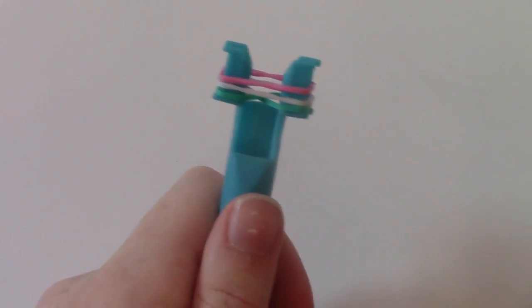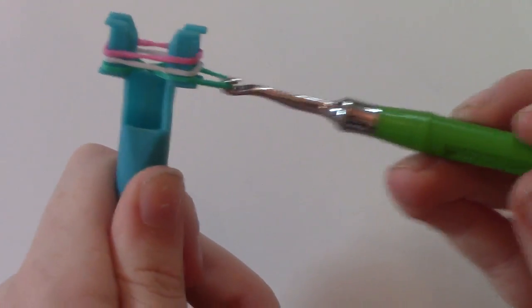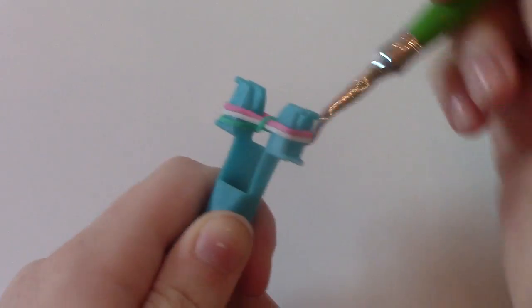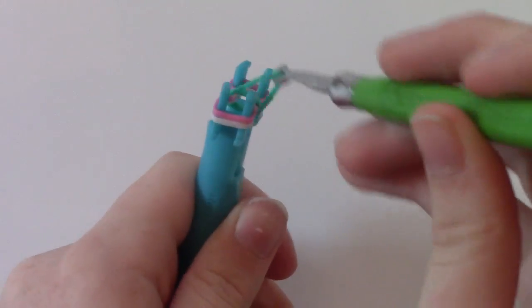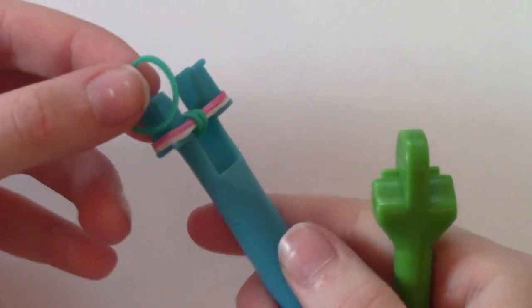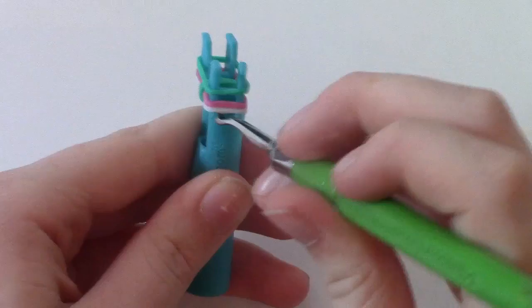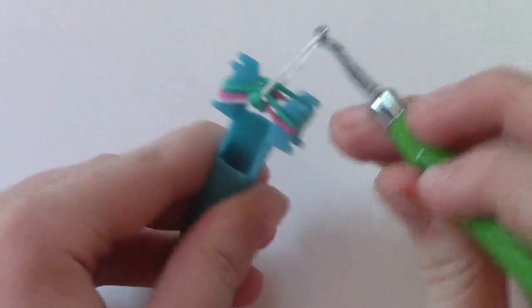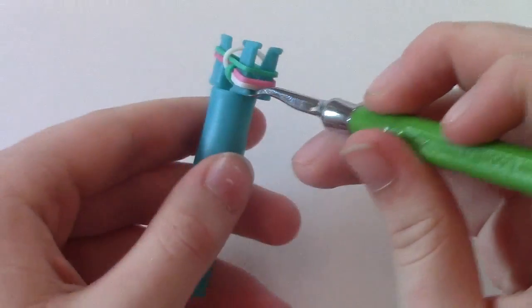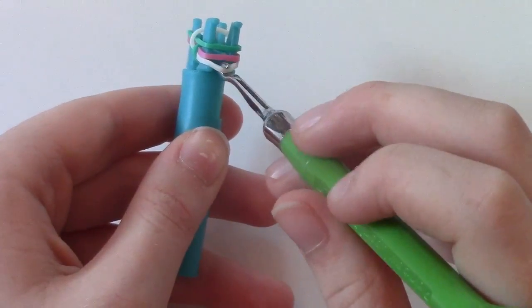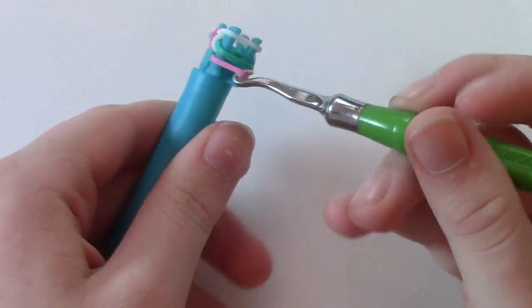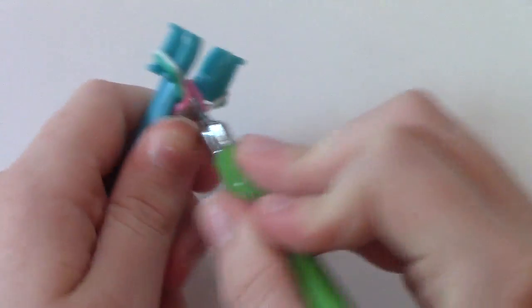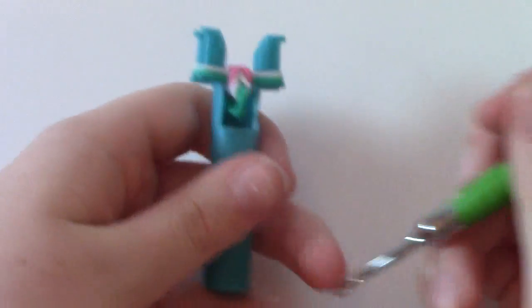You want to take that bottom band and loop it over the other one. Just get the bottom band and loop it over. All you have to do is add another one of that color. So take the bottom band and loop it over. Take the bottom band and loop it over.